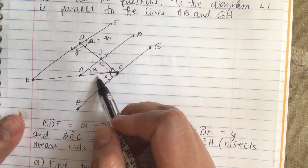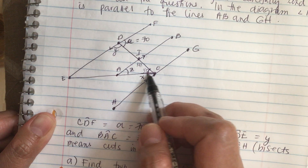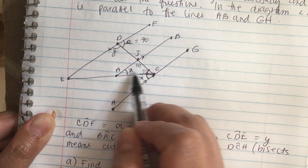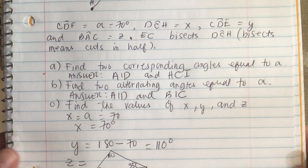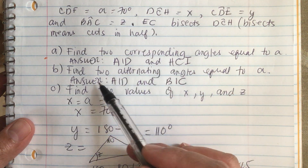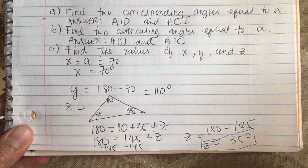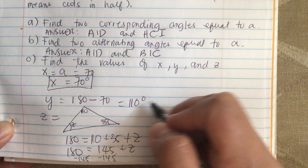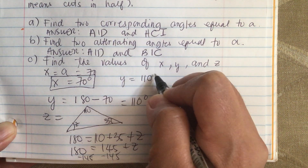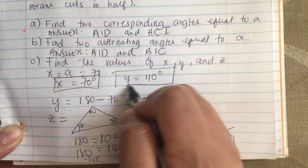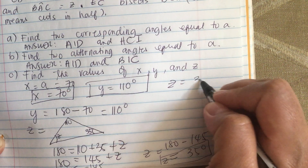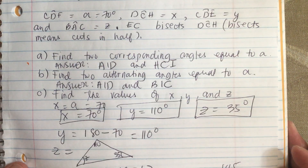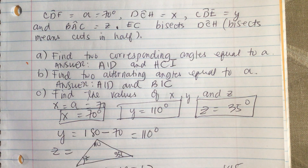Alternatively, since AC bisects DCH, this angle is 35 and this angle is 35, and with 110 on the other side, z is also 35 degrees. So the final answers are: x equals 70 degrees, y equals 110 degrees, and z equals 35 degrees.